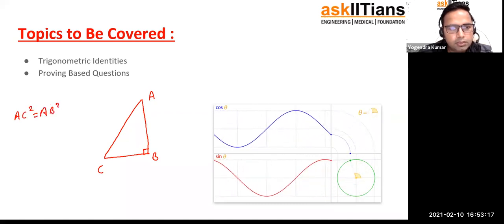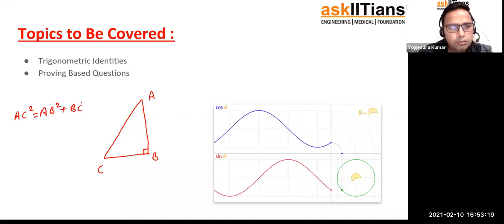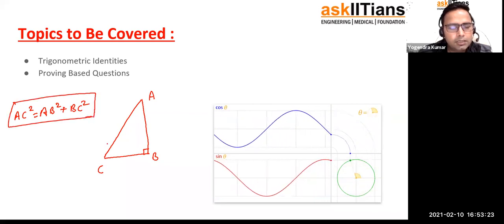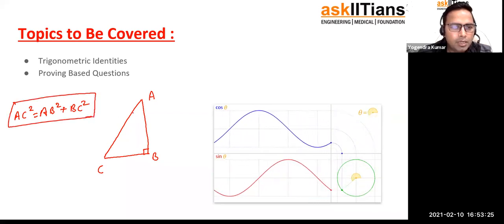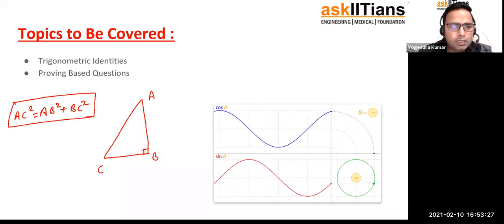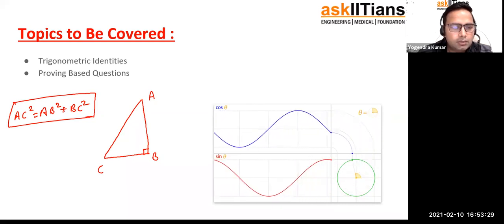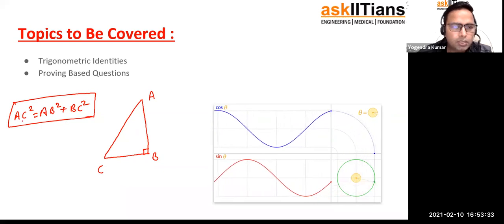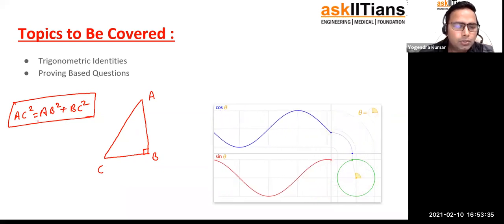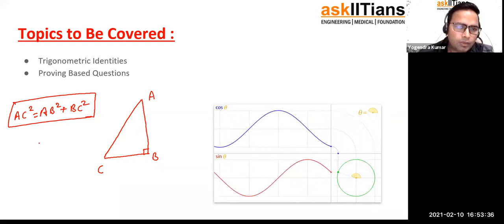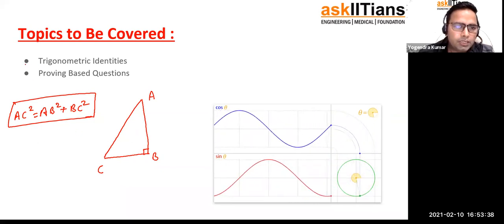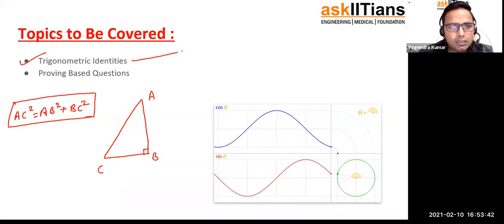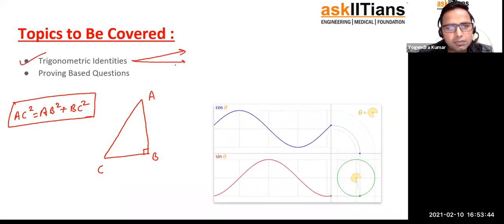You need to remember that AC² equals AB² — I hope you know this already, but I'm writing it again. Hypotenuse squared equals the sum of the squares of the other two sides. That is Pythagoras theorem, and using this only we are going to prove the trigonometric identities. Basically there are three trigonometric identities we are going to see.